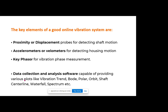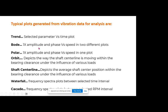When looking at a turbomachinery vibration monitoring system, the key elements of a good system are proximity probes — displacement probes for detecting shaft movement — acceleration or velocity sensors for detecting housing motion, and essentially a key phaser, which is a very important input for vibration phase measurement. Apart from that, we need good software capable of providing various data plots to diagnose machinery problems like bode, polar, orbit, shaft centerline, and more.